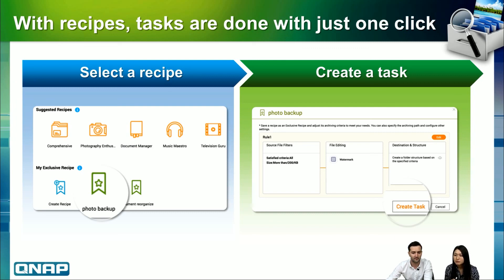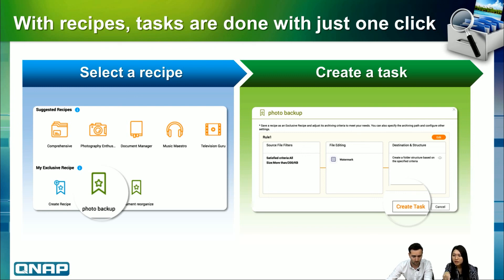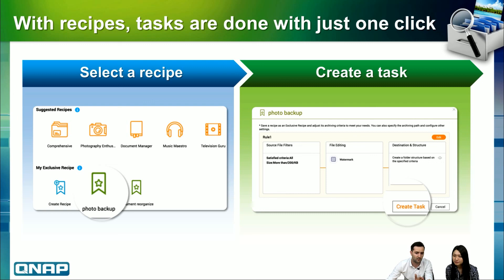This is the Recipe page. Here you will have the filing rules you have set up, and you can select any recipe and open it to create a new filing task very quickly — just one click. There are suggested recipes and exclusive recipes. You can create your own filing conditions and reuse them again and again.